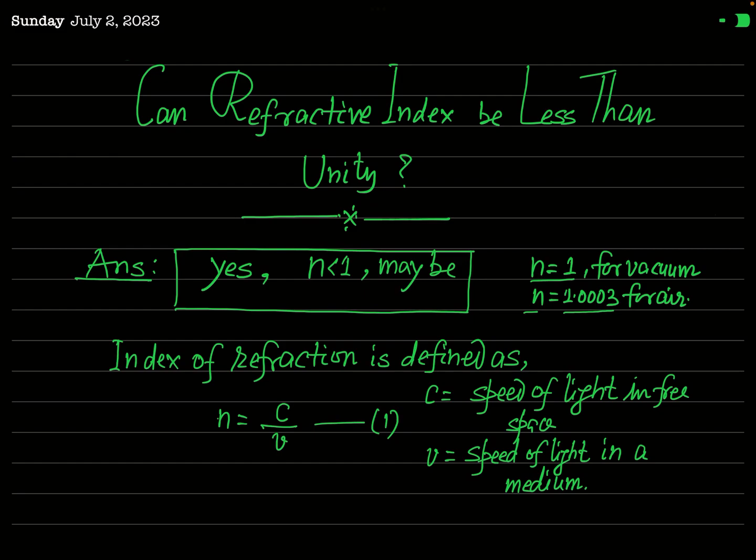It may be smaller than the refractive index of vacuum. The question is: can refractive index be less than unity? The answer is yes — n may be less than 1. It is possible, but for which type of medium? Although such media are very few in number and not generally found.